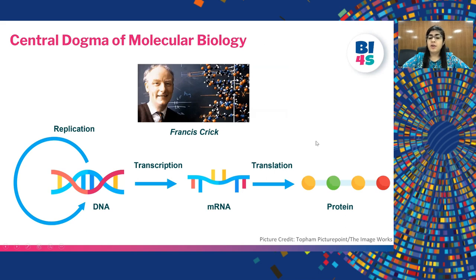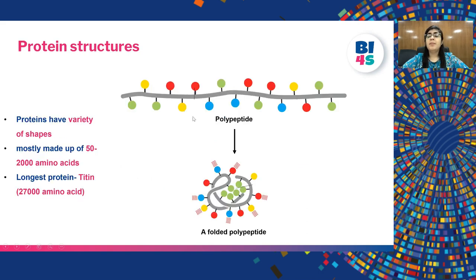Now according to the central dogma, the sequence of amino acids in a protein is already determined by DNA. The gene present on the DNA is transcribed to form an mRNA which is further translated to form a protein. A protein once formed holds itself to become fully functional. Each protein has a unique shape and most proteins are made up of about 50 to 2000 amino acids.